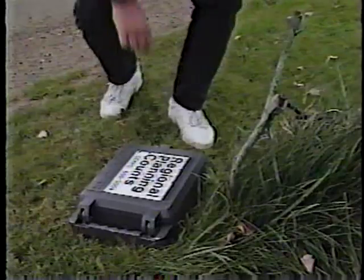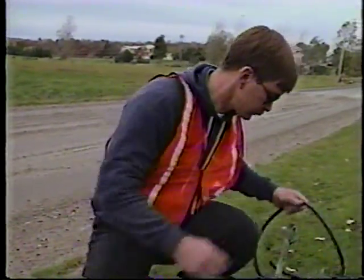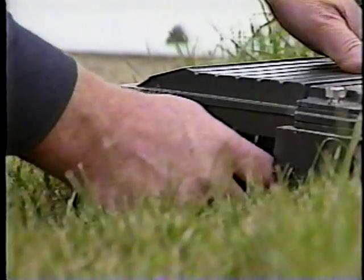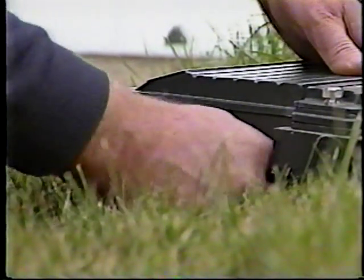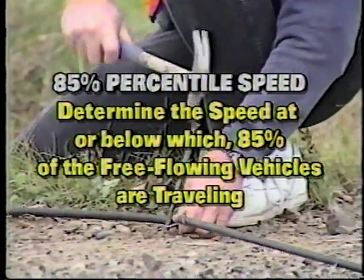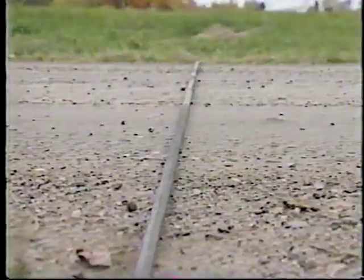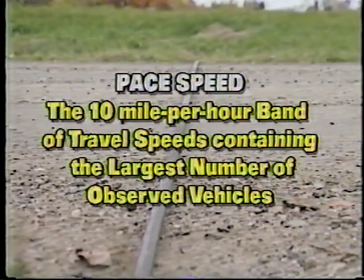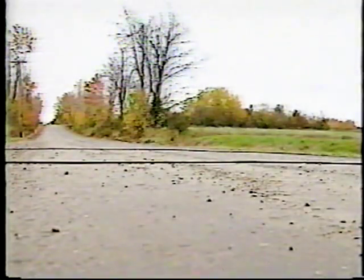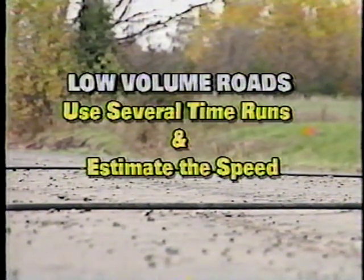The second factor is to monitor the speed at which vehicles are traveling. You do this by determining the 85th percentile speed or pace speed. Survey a minimum of 100 vehicles — surveying exactly 100 makes it easier to calculate percentages. Determine the speed at or below which 85 percent of the sample of free-flowing vehicles are traveling; this is the 85th percentile speed. The pace speed is the 10 mile-per-hour band of travel speeds containing the largest number of observed vehicles. On low-volume roads, instead of gathering a sample of 100 vehicles, you might use several time runs and estimate the speed.